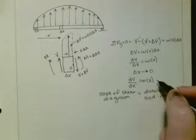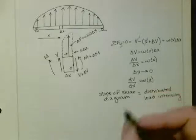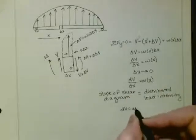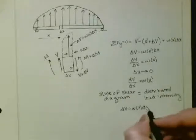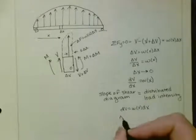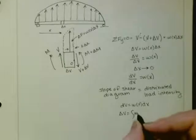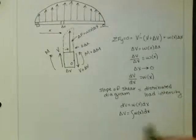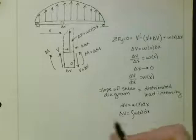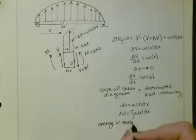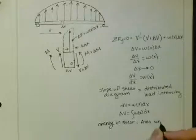Now if we take this to both sides, we get dV equals w(x) dx. Taking the integral of both sides, delta V equals the integral of w(x) dx. What this tells us is that the change in shear is equal to the area under the loading curve.